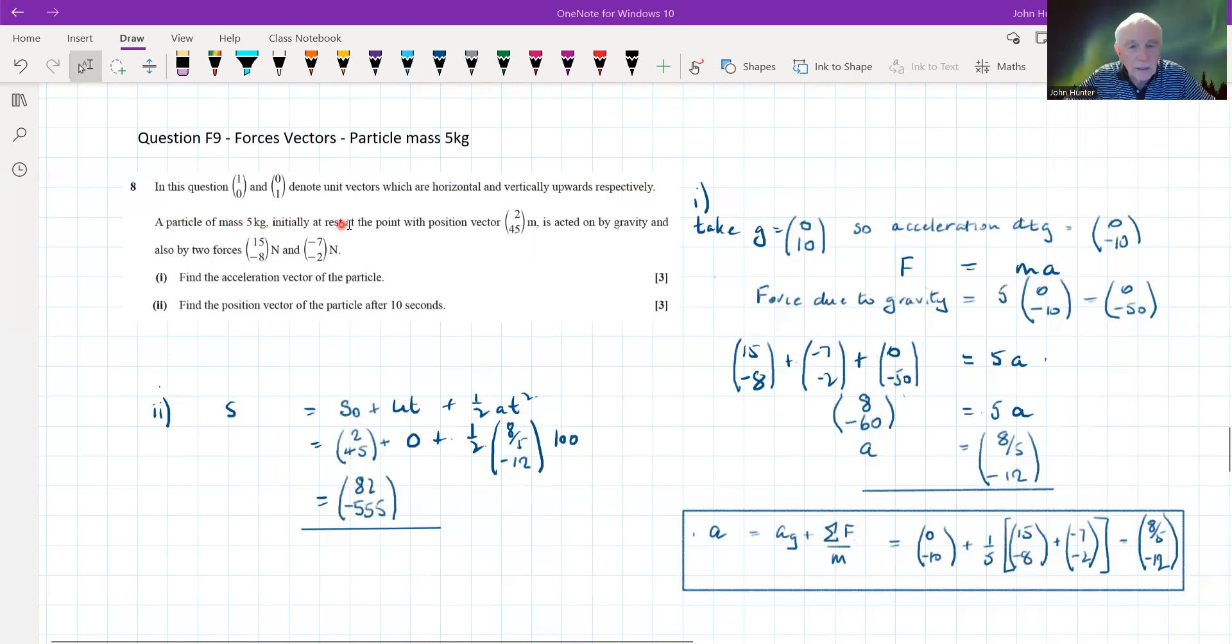Particle of mass 5 kilograms, initially at rest at the point with position vector 245, is acted on by gravity and also by two forces 15 minus 8 and minus 7 minus 2 in Newtons. Find the acceleration vector of the particle.